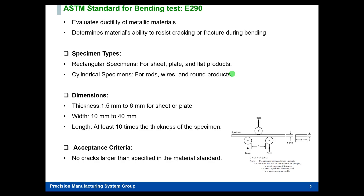As you can see, for this standard there is a thickness limitation from 1.5 mm to 6 mm. The width of the specimen should be between 10 and 40 mm, and the length of the specimen should be at least ten times the thickness. Here T stands for thickness, D for diameter, W for width, and C for the distance between the lower supports — also called the span length.